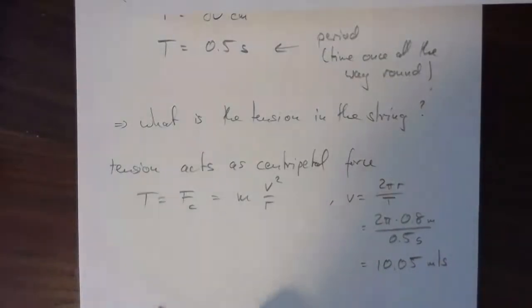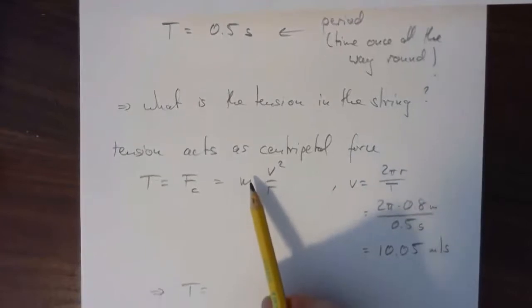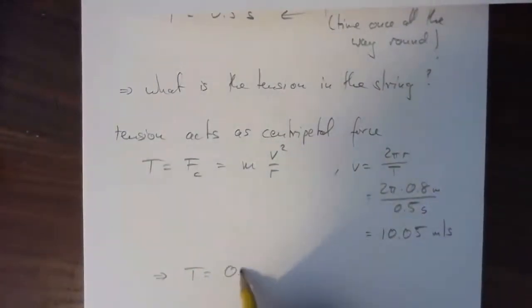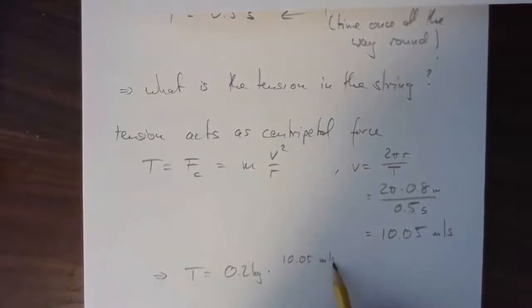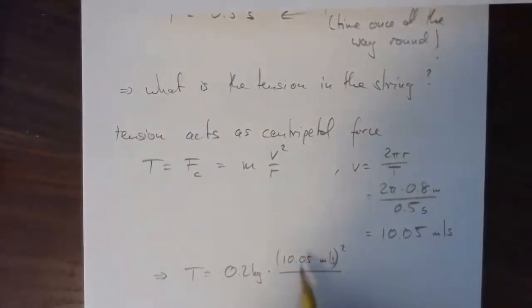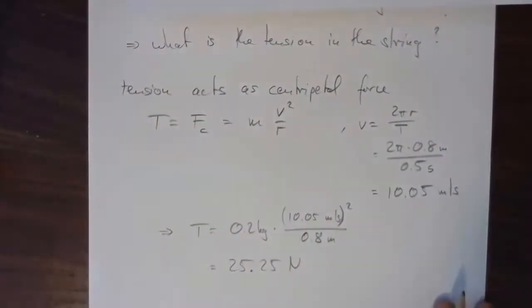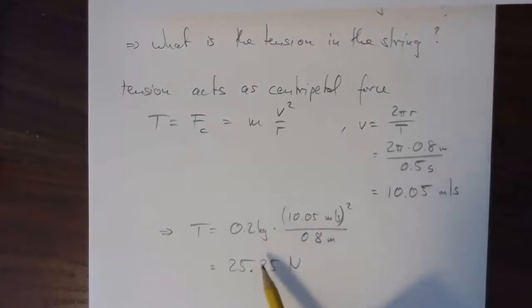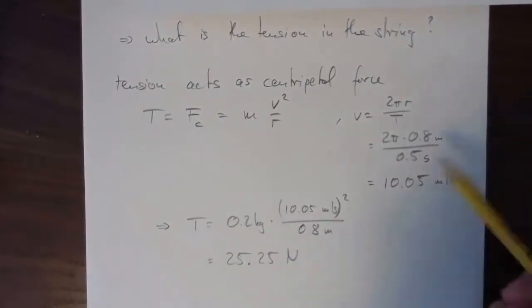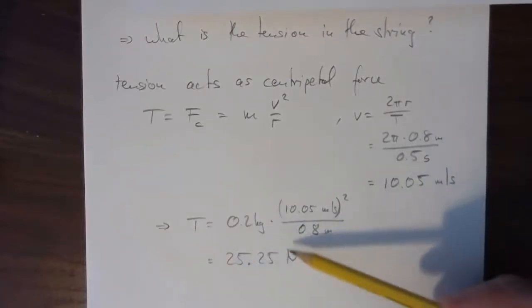Now we plug in to find the tension: F_T equals M times V squared over R = 0.2 kilograms times (10 meters per second) squared divided by 0.8 meters. That gives approximately 25.25 newtons. You should double-check with your own calculator or practice the arithmetic yourself.